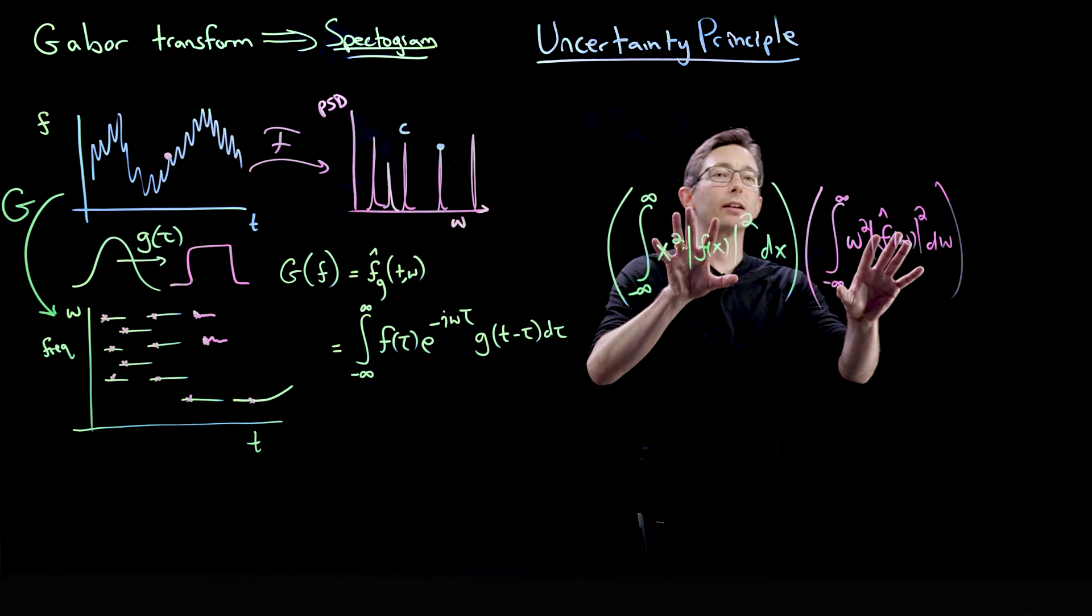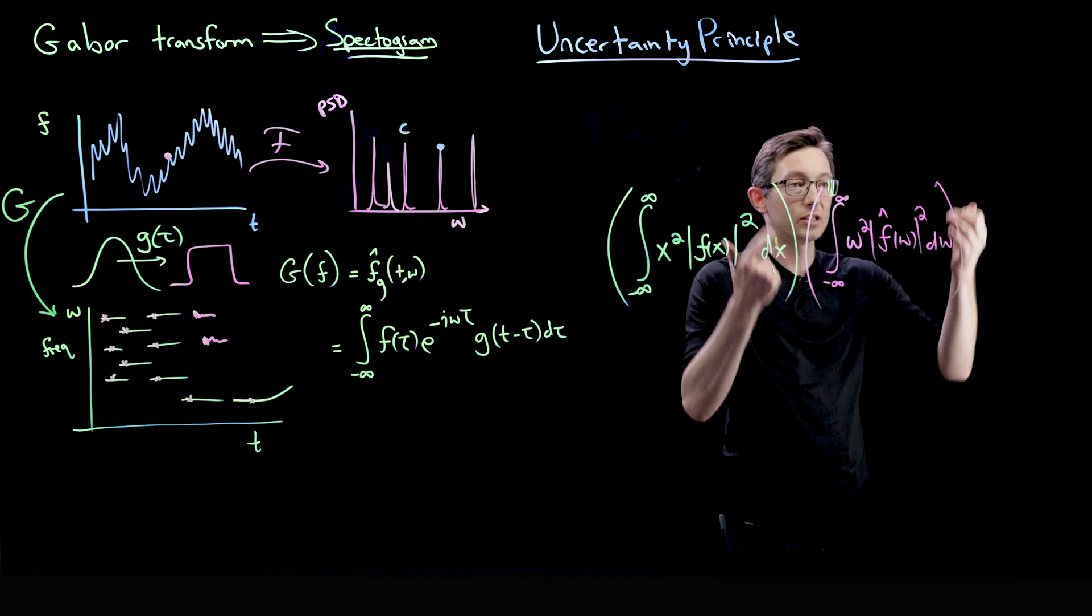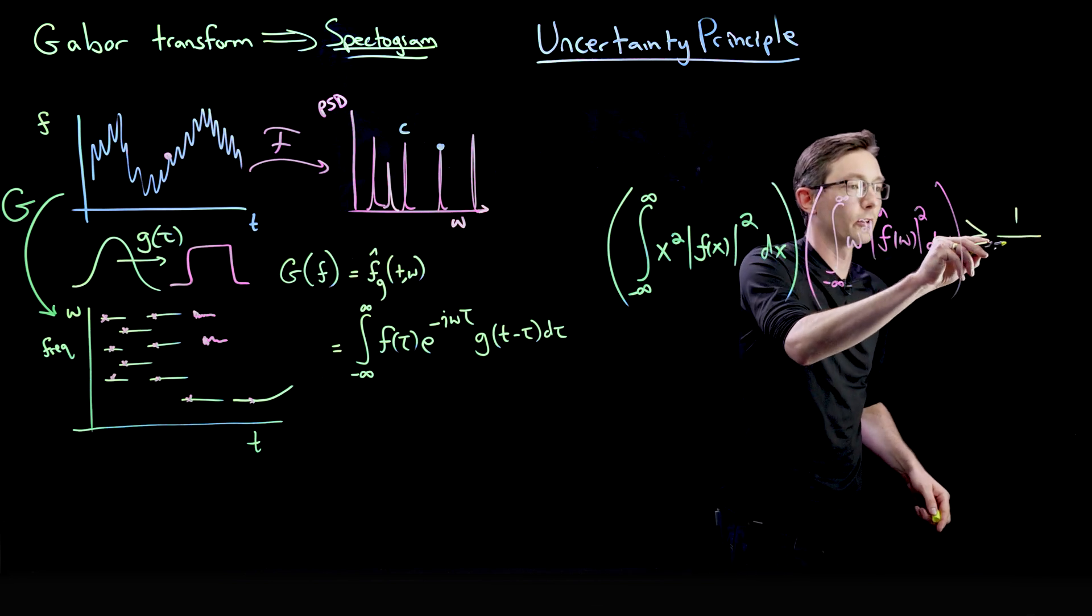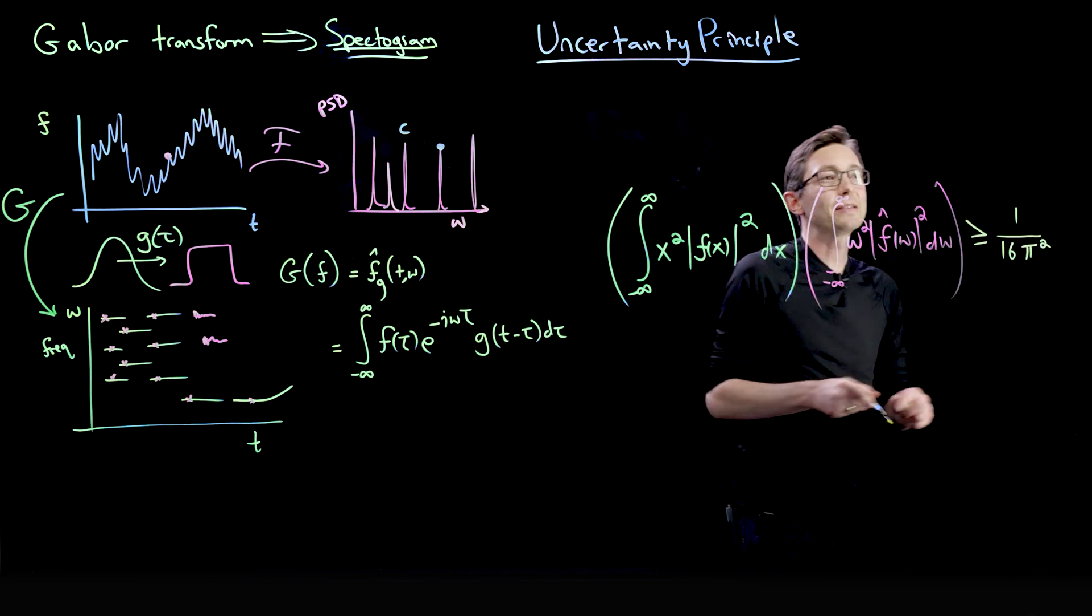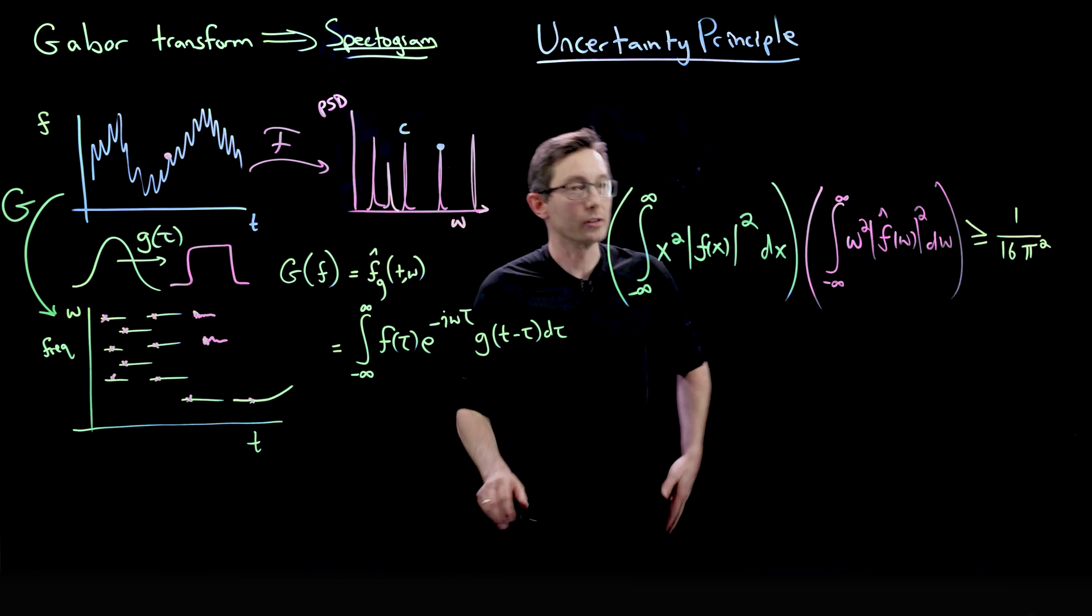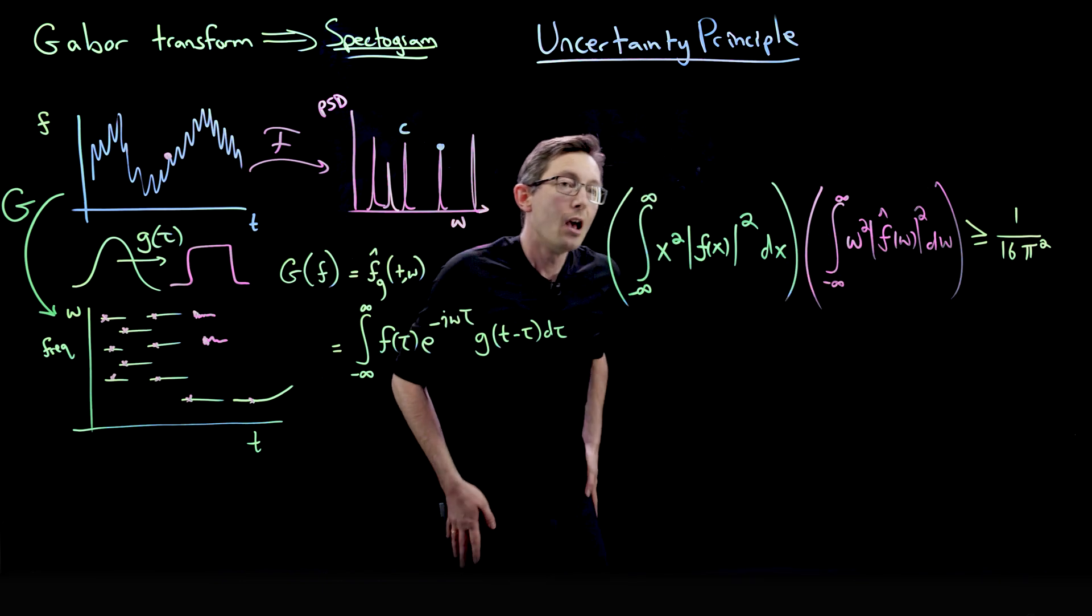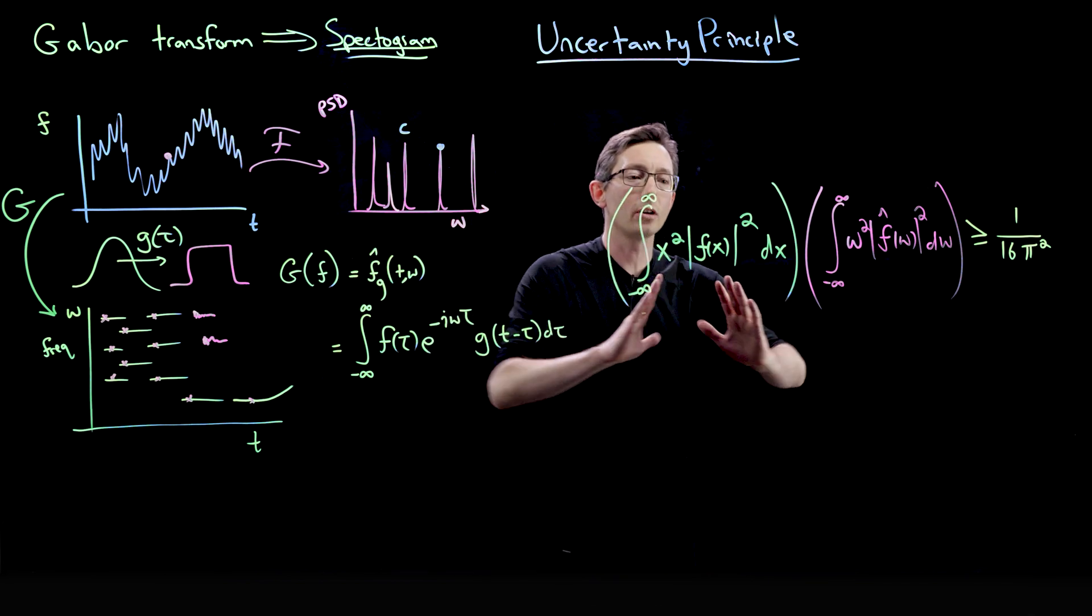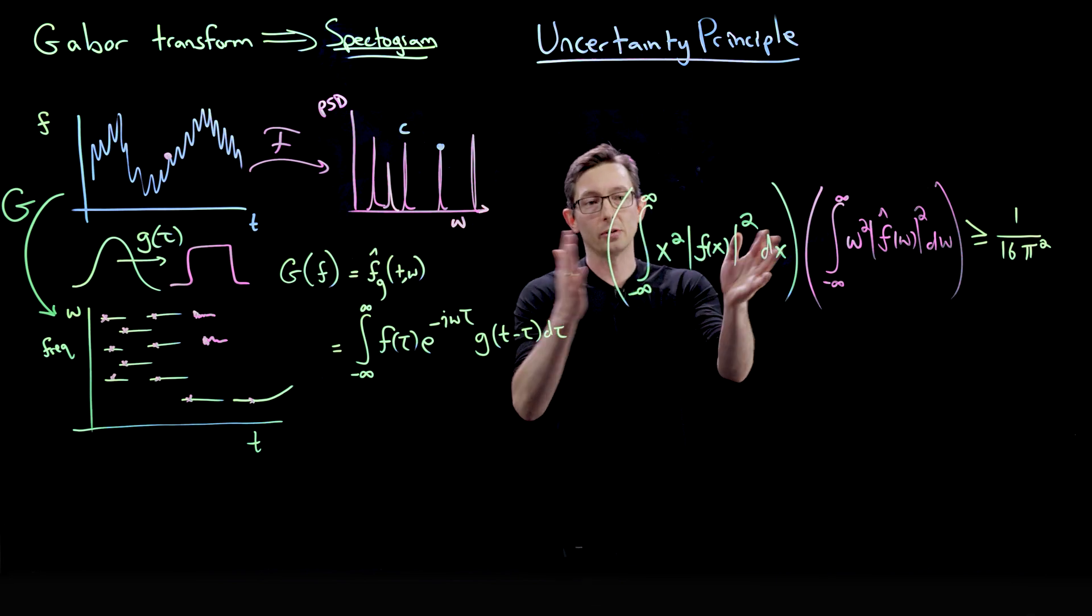This product is always greater than or equal to a certain small number. This is always greater than or equal to 1 over 16 pi squared. And this might not seem that profound at first. Okay, this is just a mathematical fact. You can derive this. This is true. But what this says is that if you try to localize where you are in space or in time. This could be space or time, whatever.